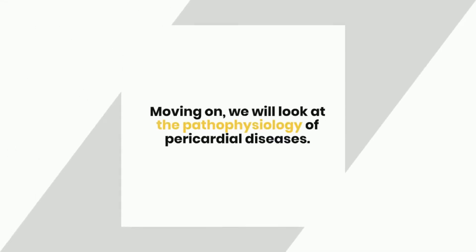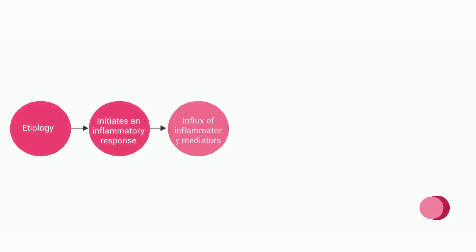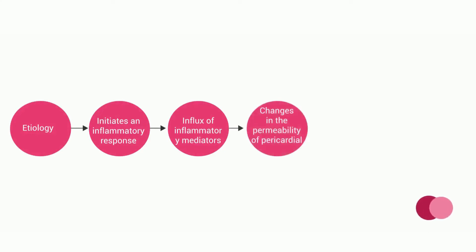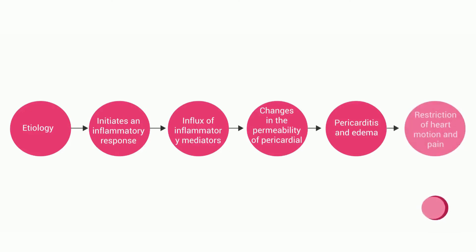Moving on, we will look at the pathophysiology of pericardial diseases. Any etiology initiates an inflammatory response with the influx of neutrophils and various chemical mediators of inflammation. This results in a change in the permeability of the pericardial vasculature and causes pericarditis and edema. The edema ultimately affects the heart and causes pain.